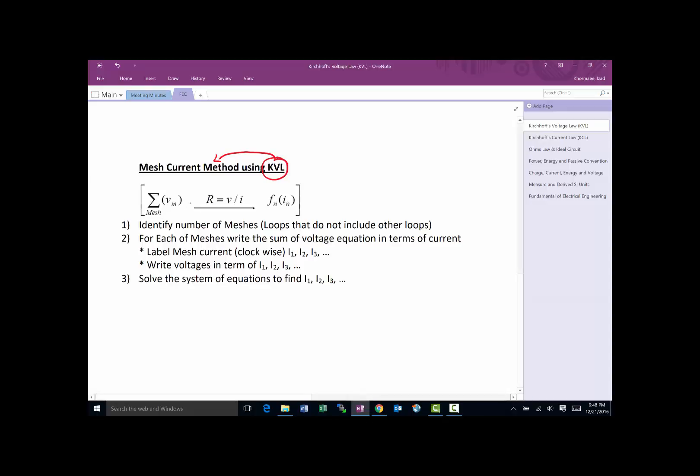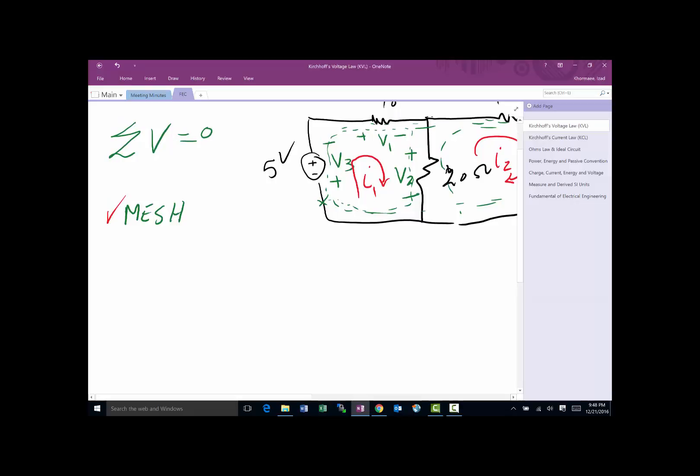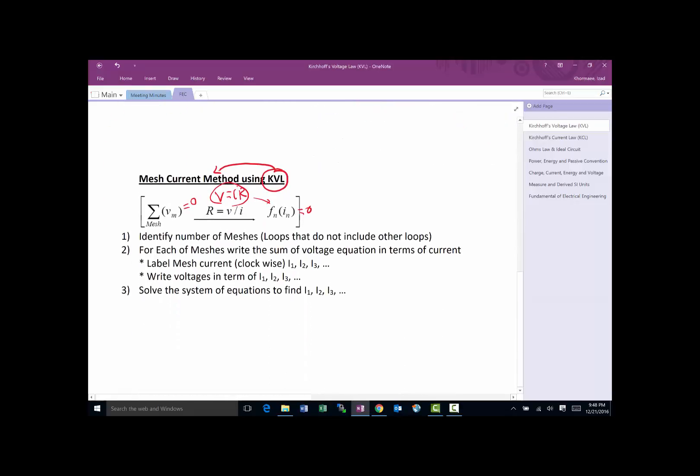KVL is the law we apply; the method of analysis is referred to as mesh current method. The whole thing is based on the idea that in any given mesh, the sum of the voltages in that mesh is equal to zero. Instead of writing in terms of voltage, we write the equation V equals IR to make sure the function we end up with is in terms of I, because in each loop there's only one I.